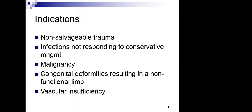An amputation is a removal of a part or whole of a limb or appendage. It need not necessarily be a limb, but for the purposes of rehabilitation we are considering only amputation of the upper limb and lower limb. Parts like an ear, tongue, or nose can also be amputated, but those are cosmetic and not within our field.